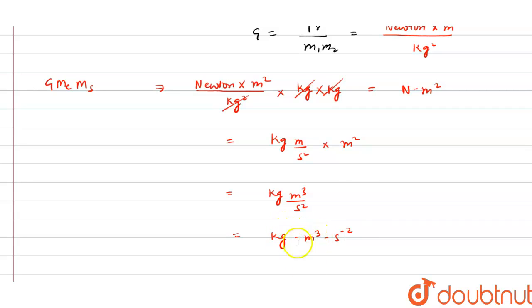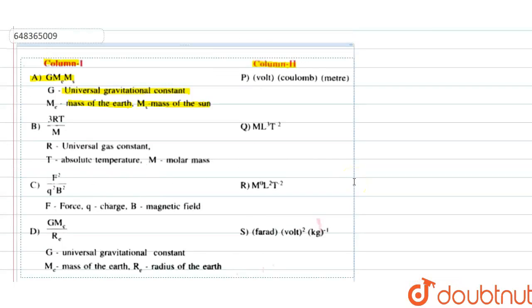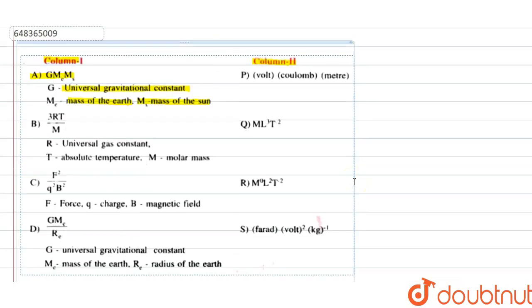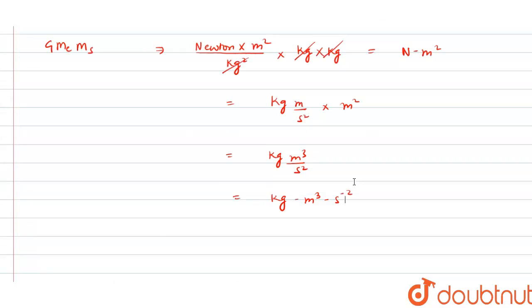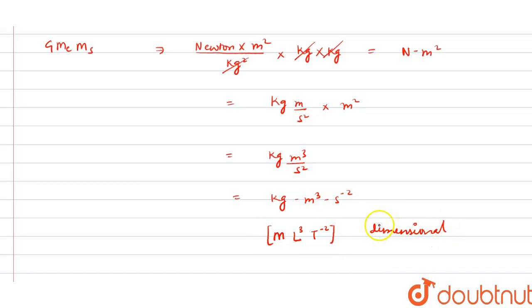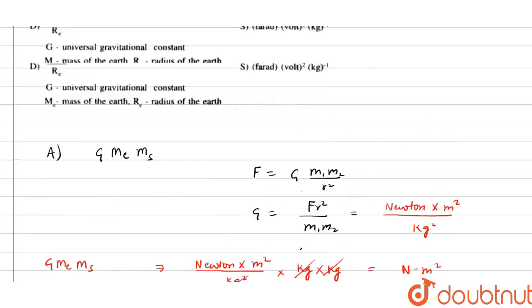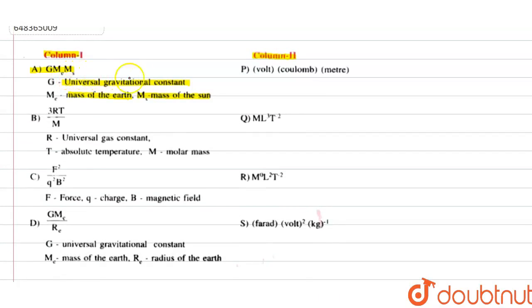The dimensional formula is M¹L³T⁻². Checking the options, option A matches with option Q. So A matches with Q.